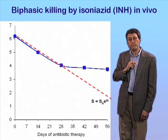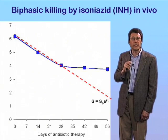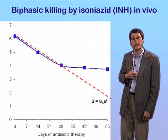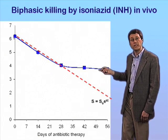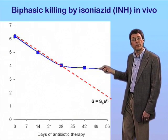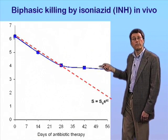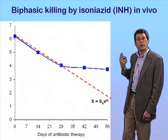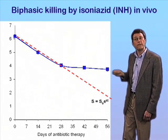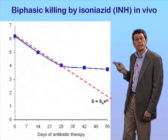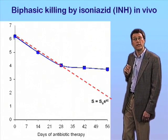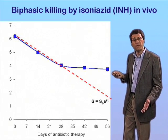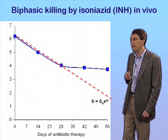We call them persisters to distinguish them from the resistors, which are bacteria that have evolved through mutation resistance to the antibiotics, because this is a phenotypic, metastable state that is not inherited by the progeny of these cells. If you were to take these bacteria out of the tissues, regrow them in culture, reinfect animals, and treat them again, you would get exactly the same curve back. They are not stably, heritably resistant mutants. This is a purely phenotypic phenomenon that we know very little about.